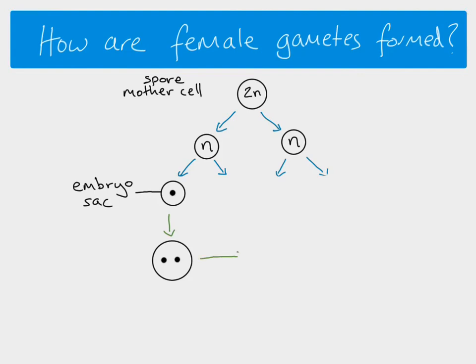We then get a second mitotic division, which means we end up with four haploid nuclei inside our embryo sac. And then we get one more, so we have our third mitotic division, which means we end up with eight haploid nuclei inside the sac.